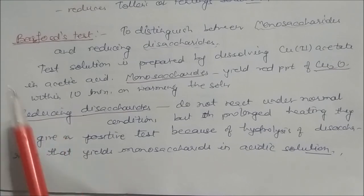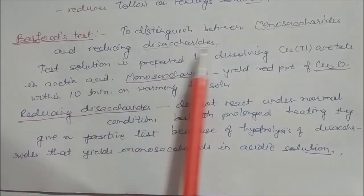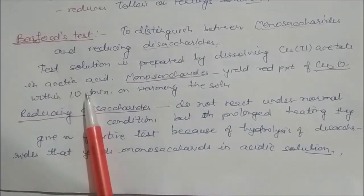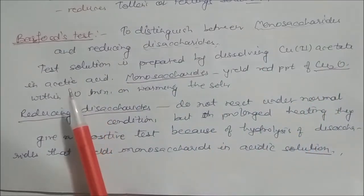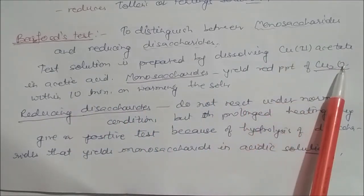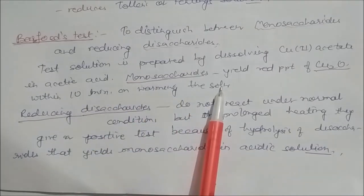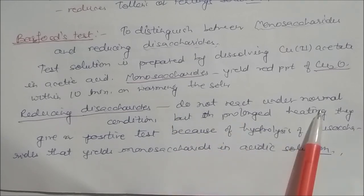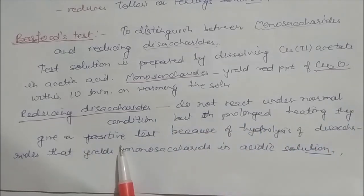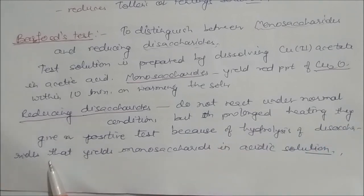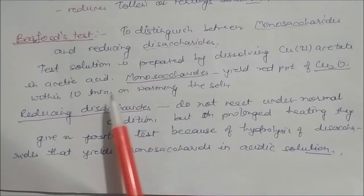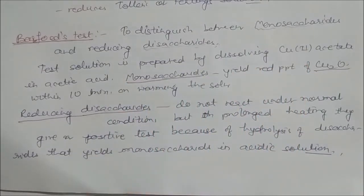Barfoed's test distinguishes monosaccharides from reducing disaccharides. The test solution is copper acetate dissolved in acetic acid. Monosaccharides give a red precipitate of Cu₂O within 10 minutes on warming. Reducing disaccharides do not react under normal conditions, but on prolonged heating give a positive test — because prolonged heating causes hydrolysis of the disaccharide to yield monosaccharides in the acidic solution. This is the distinction between monosaccharides and reducing disaccharides.